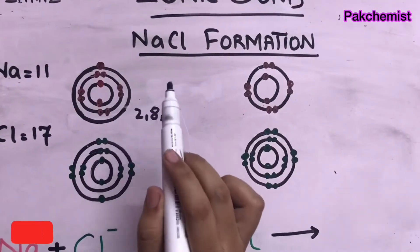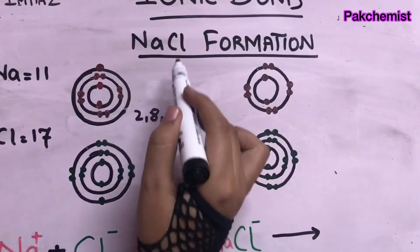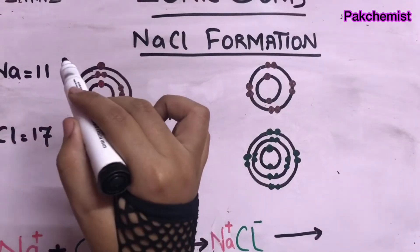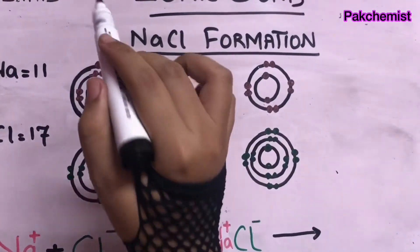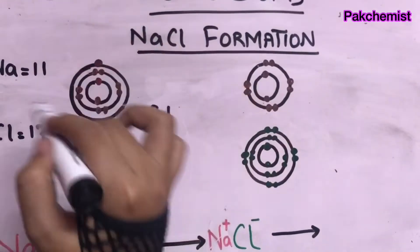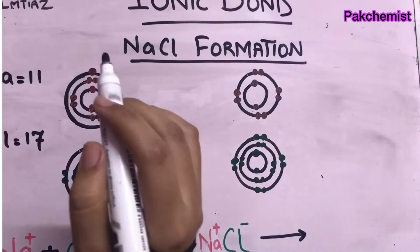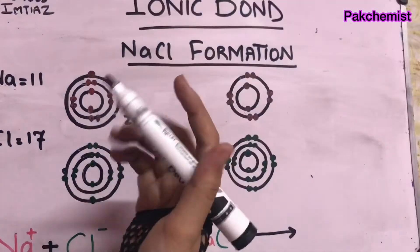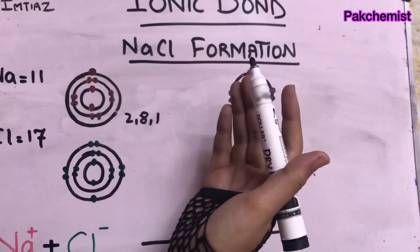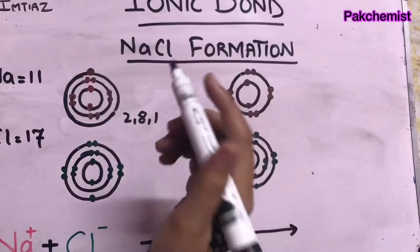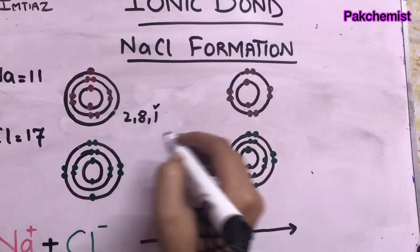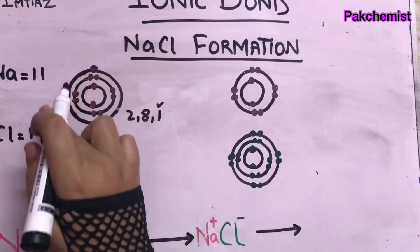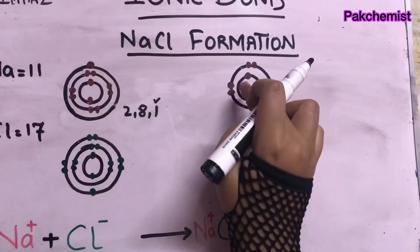To complete its outermost shell, Na can either gain 7 electrons or lose 1 electron. It chooses to lose the electron because losing one electron is easier. So Na loses this last electron, the last shell is removed, and it remains with two shells.